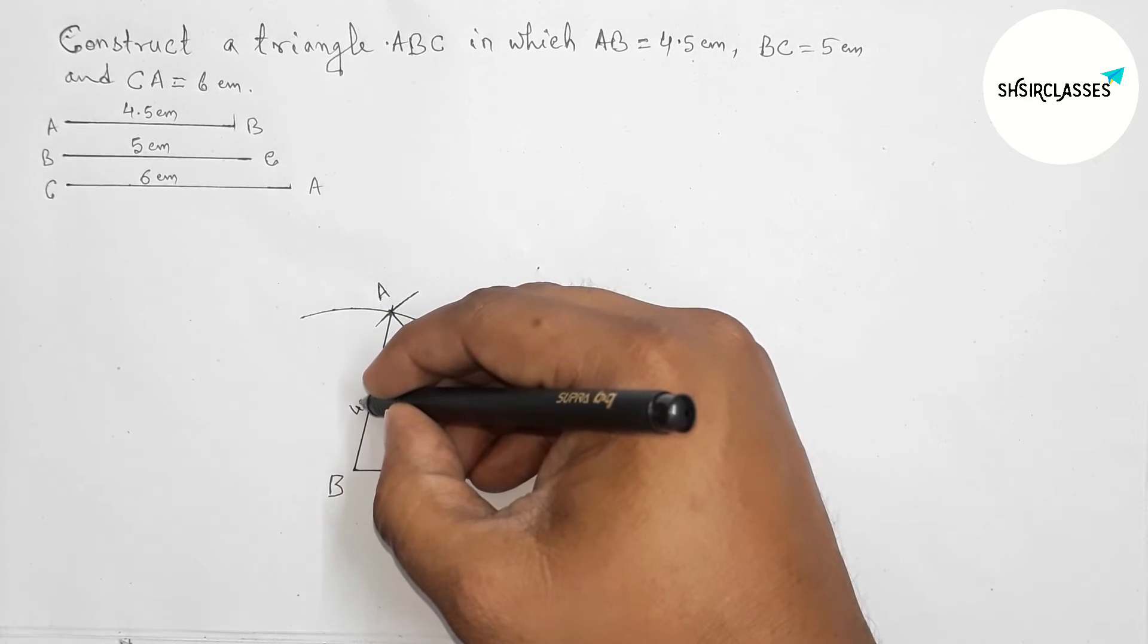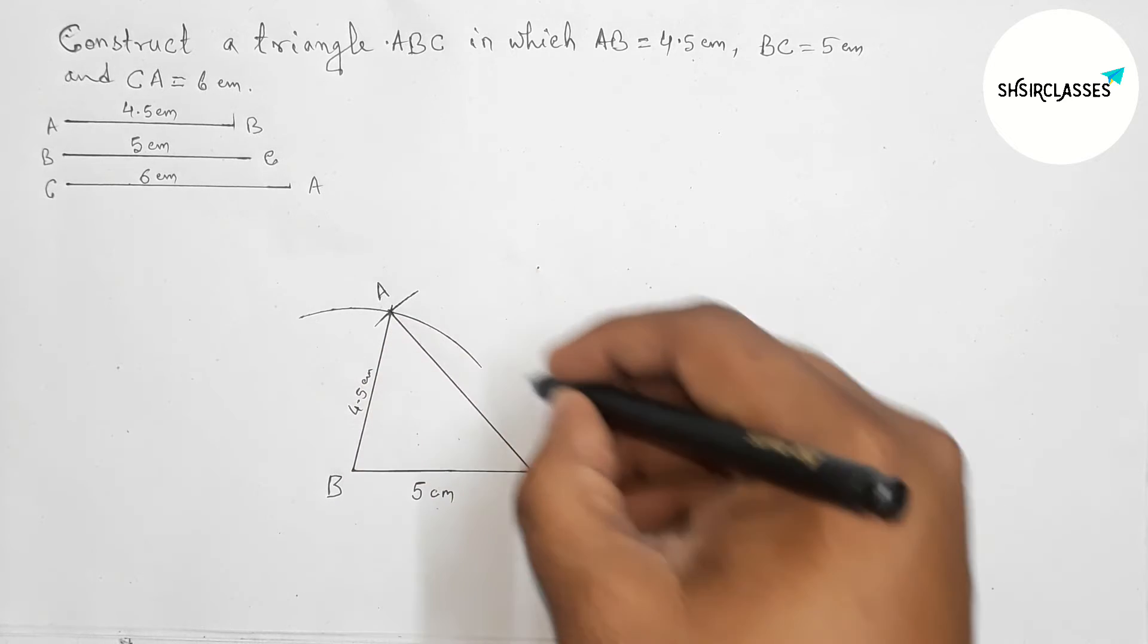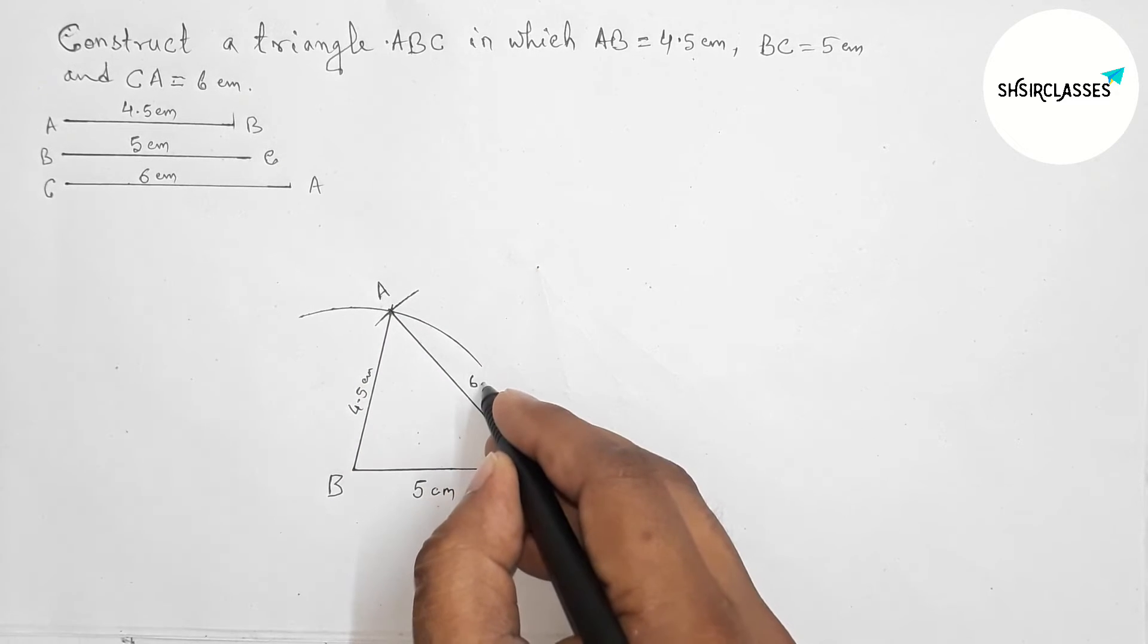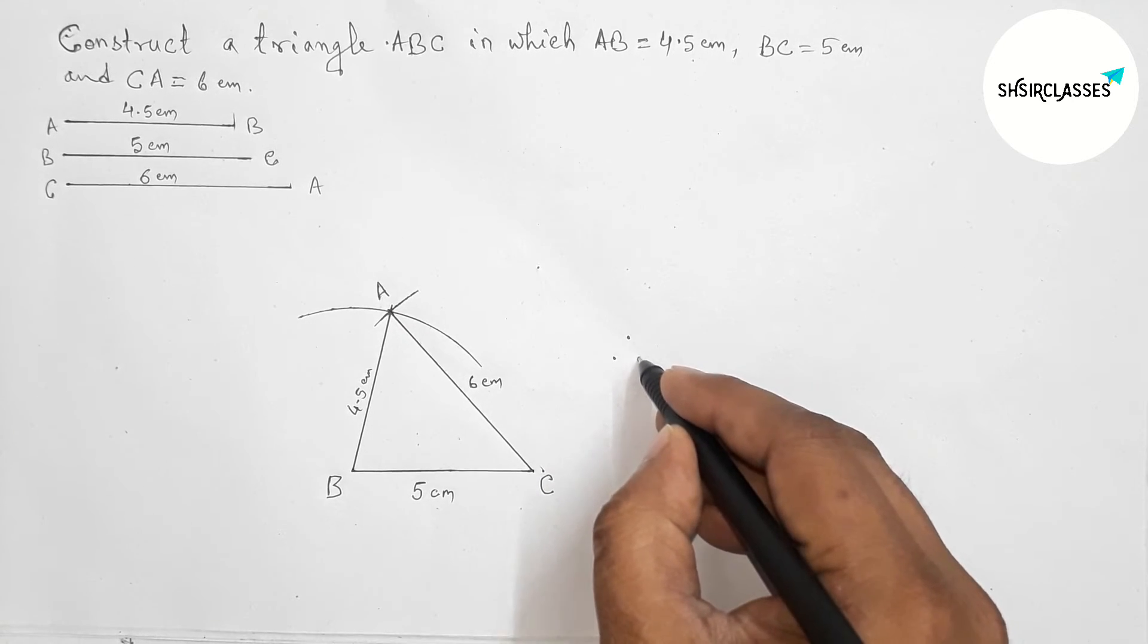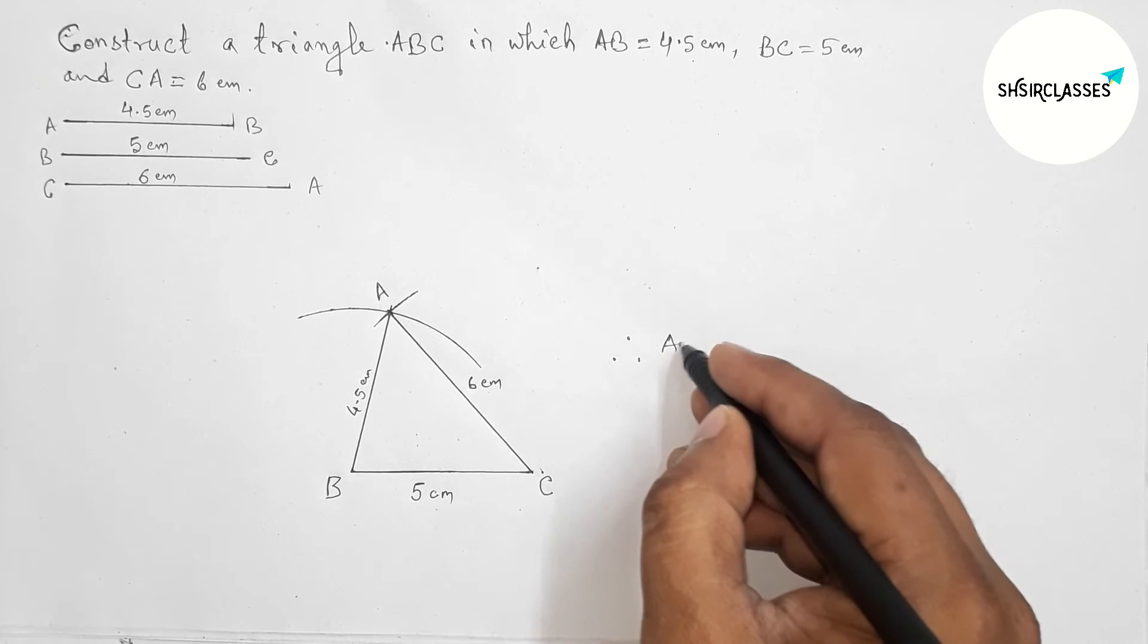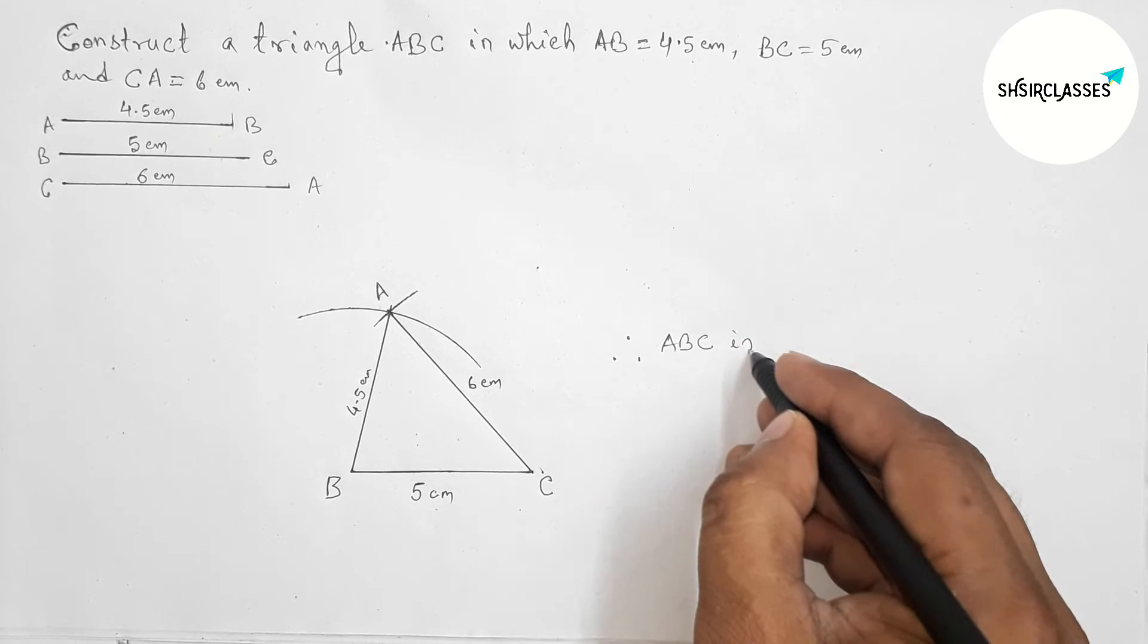So here this is AB, 4.5 centimeters on this side, and 6 centimeters. So we have got our required triangle ABC.